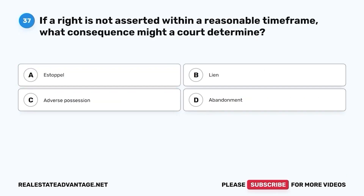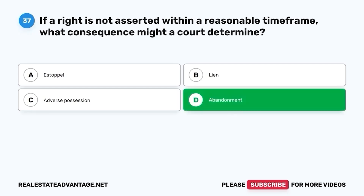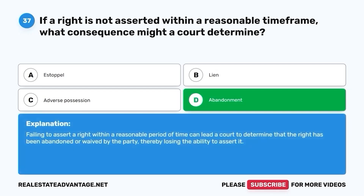Question 37. If a right is not asserted within a reasonable time frame, what consequence might a court determine? A. Estoppel. B. Lien. C. Adverse possession. D. Abandonment. The correct answer is D. Abandonment. Failing to assert a right within a reasonable period of time can lead a court to determine that the right has been abandoned or waived by the party, thereby losing the ability to assert it.